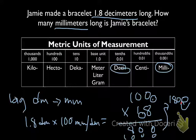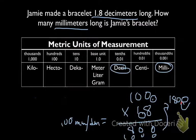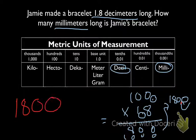And so instead of 1,800, we stick a decimal point, 1 point from the right, and we're left with 180. So how many millimeters long is Jamie's bracelet? It's 180 millimeters.